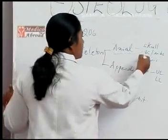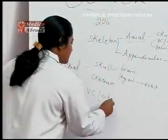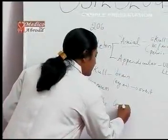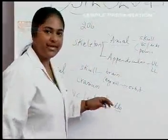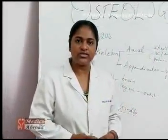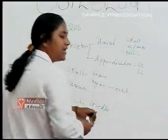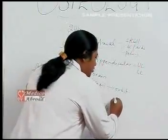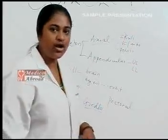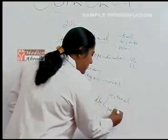Next, we come to the vertebral column and ribs. We have something called a girdle — a cage or bony enclosure in which internal organs are contained. The girdle in the trunk is called the pectoral girdle, and the girdle in the pelvic region is called the pelvic girdle.